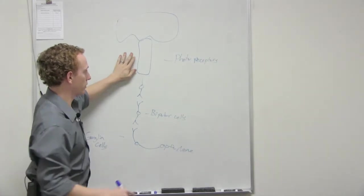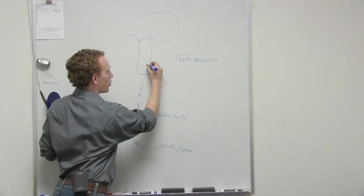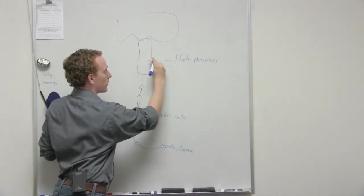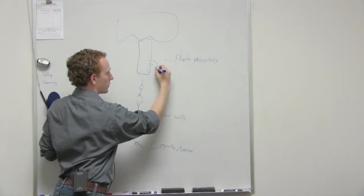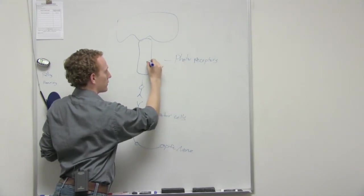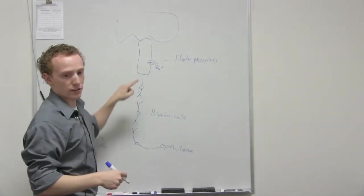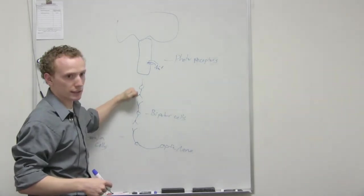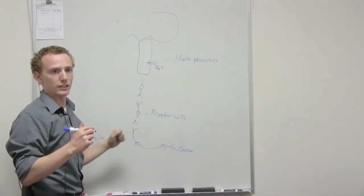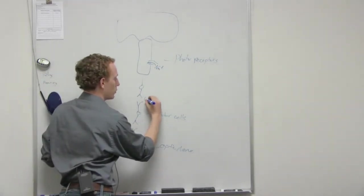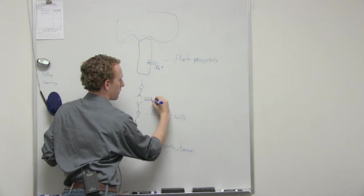So photoreceptors. What they have on them is a sodium channel. In the dark, it is open and sodium can flow in. It's depolarization. So if it depolarizes, that means it's going to be releasing its neurotransmitter. What's the name of its neurotransmitter? Glutamate.